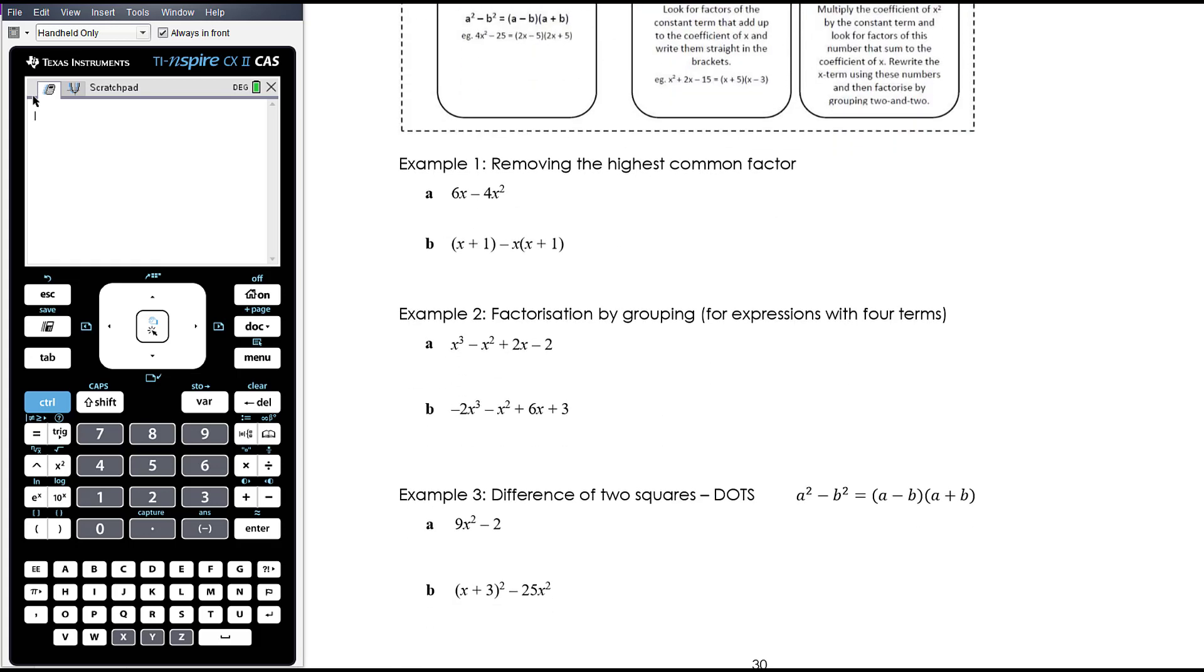Example one, removing the highest common factor. So 6x minus 4x squared, there's a numeric common factor of 2. There's also an x in common. When we take that out, we get left with 3 minus 2x. What's left in the bracket isn't a difference of two squares, and so that's as far as I'm going to be able to go.